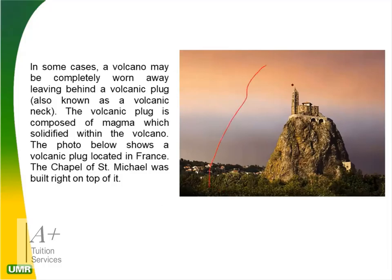In some cases a volcano may be completely worn away, leaving behind a volcanic plug. After millions of years the volcano wears out, leaving only the plug — below which was once the magma chamber. The Chapel of Saint Michael in France is built on top of a volcanic plug. When the plates move the volcano becomes dormant and these areas can eventually be inhabited.